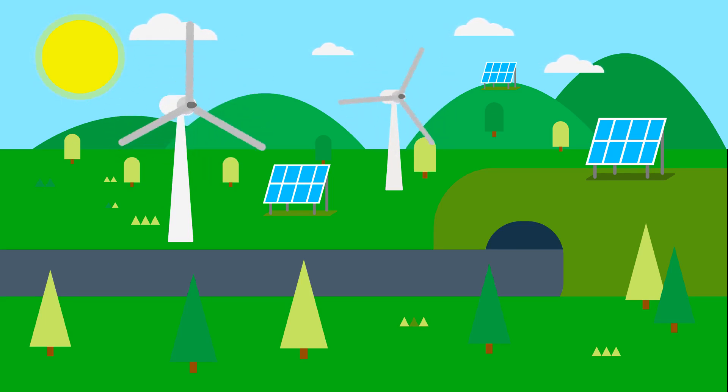Once the solar panels are installed, our team will conduct a thorough testing process to ensure everything is functioning as expected. We will check the electrical connections, monitor the system's performance, and make any necessary adjustments. Once the system is tested and approved, it will be activated, and you can start generating your own clean and renewable energy.